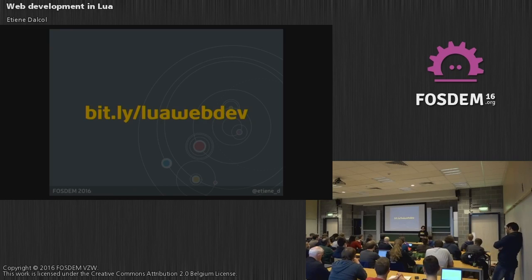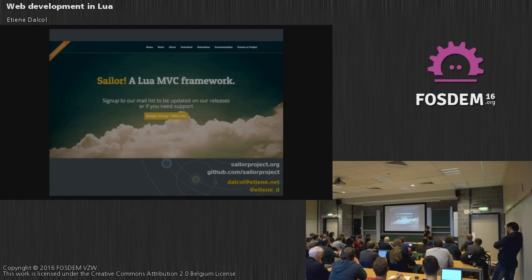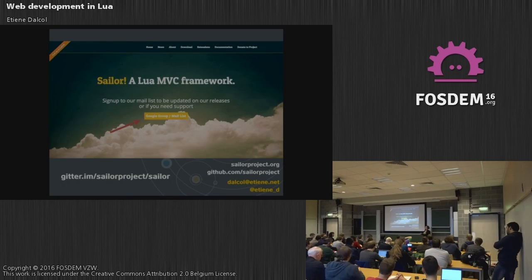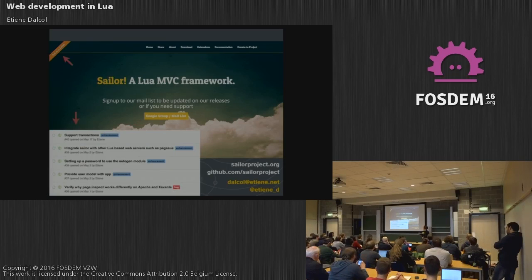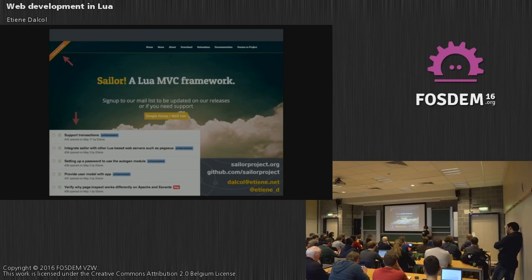Now I'm coming to the end of my talk. If you want to know more about Sailor, the website is sailorproject.org. You'll find everything on GitHub at github.com/sailorproject. We have a Google Group mailing list where you can discuss and suggest design ideas — you are more than welcome. We also have a Gitter chat for synchronous communication. If you want to contribute, go to GitHub and take a look at our issues — we have plenty of discussions and things that could be worked on. If you want to go to GitHub just to give us a star, you're also welcome. I love stars. Thank you.